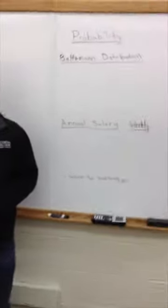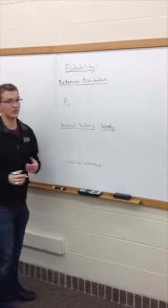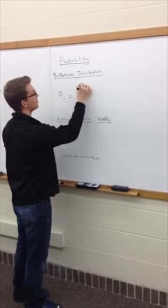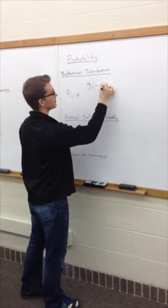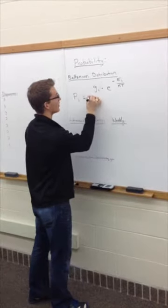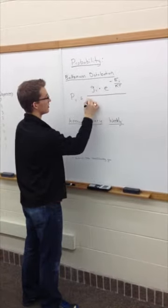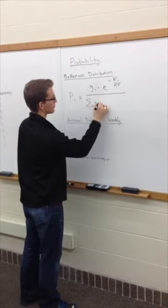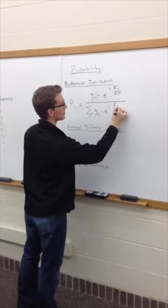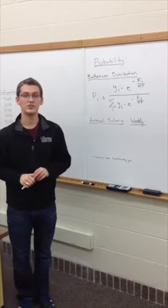When we talk about probability, we use the Boltzmann distribution. The probability of a certain state i — in our case a cost configuration — is equal to the degeneracy of that state times e to the negative energy over kT, all divided by the sum of the degeneracy times e to the negative energy over kT for all states. That's our general probability formula, and we'll use it to find the probabilities for each configuration.